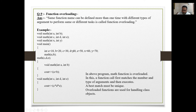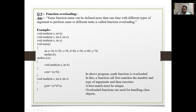In the main function, values are assigned to variables a through y. Calling math(a, b) for one task, and math(c, d, e) for another. In the void math(int a, int b) definition, it performs addition: cout << a + b. In void math(int c, int d, int e), it performs multiplication: cout << c * d * e. The function names are the same but the tasks are different — this is function overloading.